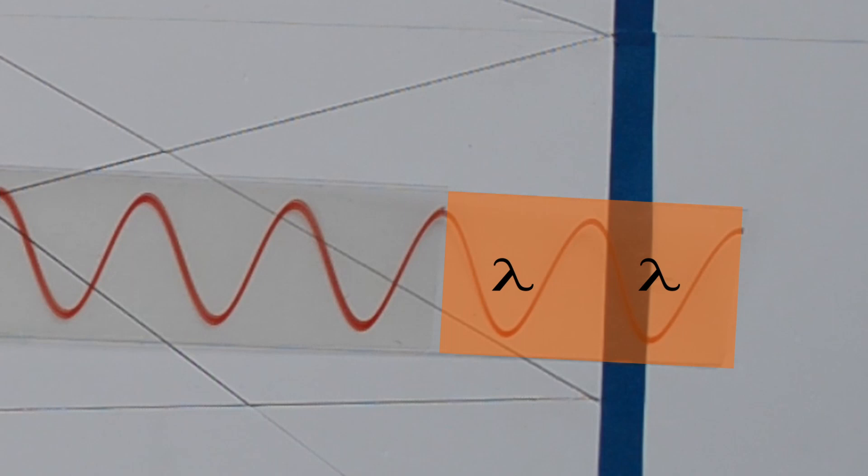There must be some relation between the wavelength of light, distance between two point sources, as well as the distance between point sources and the screen. This can be represented with the help of a formula.